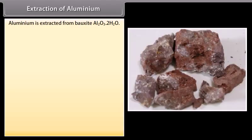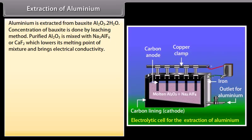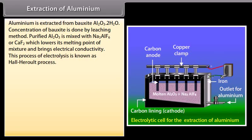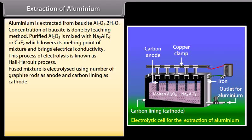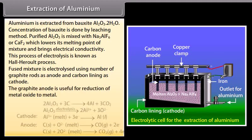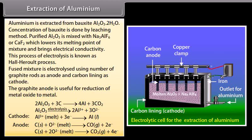Extraction of aluminum. Aluminum is extracted from bauxite Al2O3·2H2O. Concentration of bauxite is done by leaching method. Purified Al2O3 is mixed with Na3AlF6 or CaF2 which lowers its melting point of mixture and brings electrical conductivity. This process of electrolysis is known as Hall-Heroult process. Fused mixture is electrolyzed using number of graphite rods as anode and carbon lining as cathode. The graphite anode is useful for reduction of metal oxide to metal.